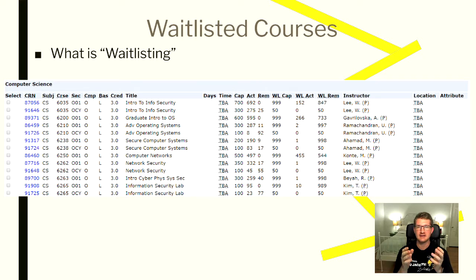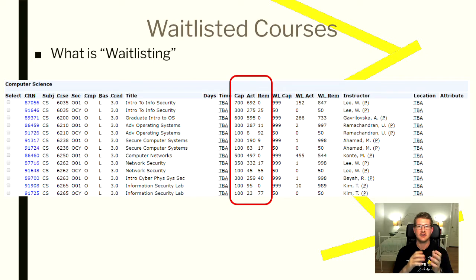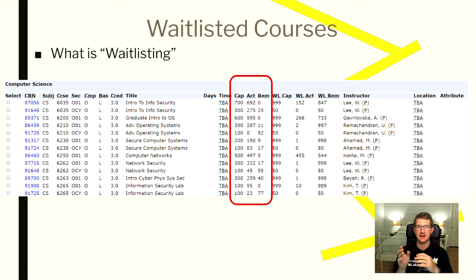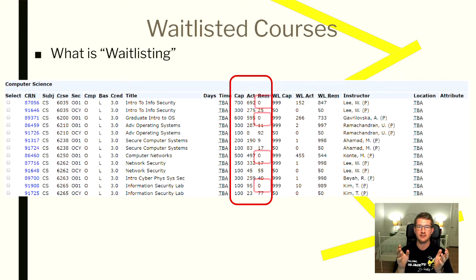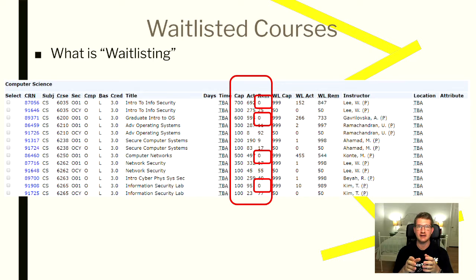What we're looking at now is a snippet of a bunch of courses for this semester that I'm signing up for, Fall 2019. As you can see, you have the cap, the action, and the remaining. The cap is the total number of students allowed in that course, the action is the number of students who have currently signed up, and the remaining is the number of open seats. If remaining is not equal to zero, most likely if you sign up for that class you'll get right in. However, there are currently a bunch of places where remaining is equal to zero, meaning that class is filled to the brim, and if you were to sign up for those classes, you would be placed on the waitlist.